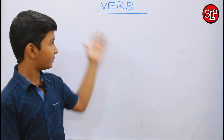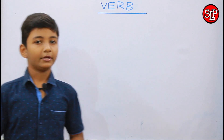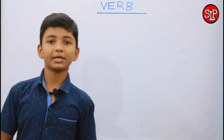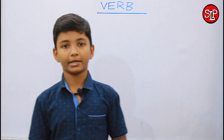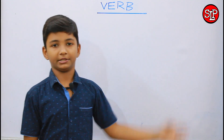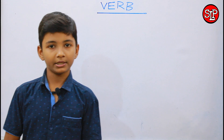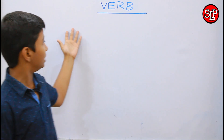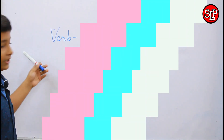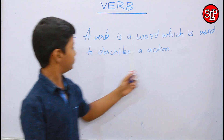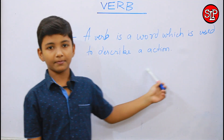First of all, let's know what is verb. A verb is a word that is used to describe a work or action — we call it a verb. For example, playing, reading, cooking, drinking, etc. are called verbs. So, the definition of verb is: a verb is a word which is used to describe an action.